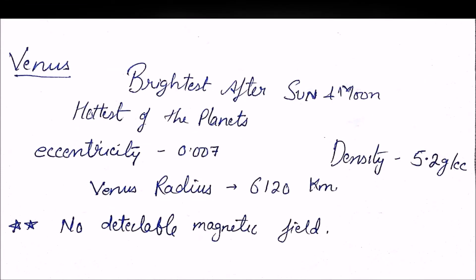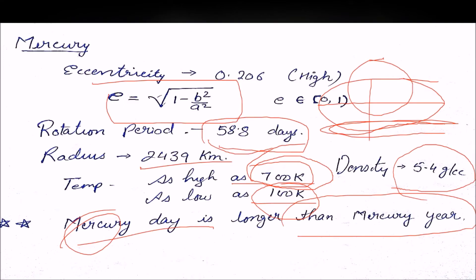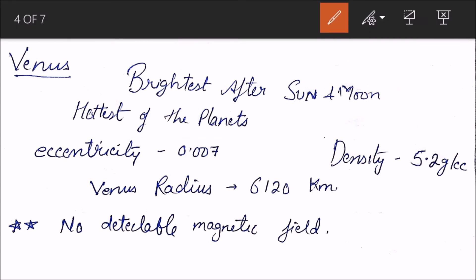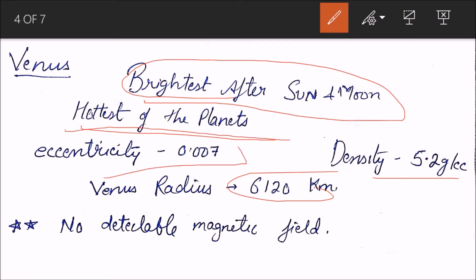Venus is like a sister planet of Earth because the radius is almost similar to that of Earth. Earth's radius is 6,400 kilometers; Venus's radius is 6,120 kilometers. Density is 5.2 grams per cc; Earth's density is around 5.5. It is the brightest after the Sun and Moon and the hottest of the planets. Eccentricity is 0.007, which is a low value, meaning the orbit is almost circular. There is no detectable magnetic field in Venus.